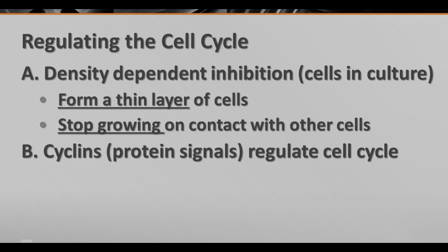There are things we've learned about regulating the cell cycle based on what happens to cells in culture. In culturing cells in the laboratory, scientists have discovered something called density-dependent inhibition. What happens is, if they put the cells in the growth medium, the cells will grow until they form a thin layer, and then they'll stop growing when they come in contact with other groups of cells. If they remove some of the cells from the middle, they'll start growing again until they reach that contact point, and then they'll stop again.